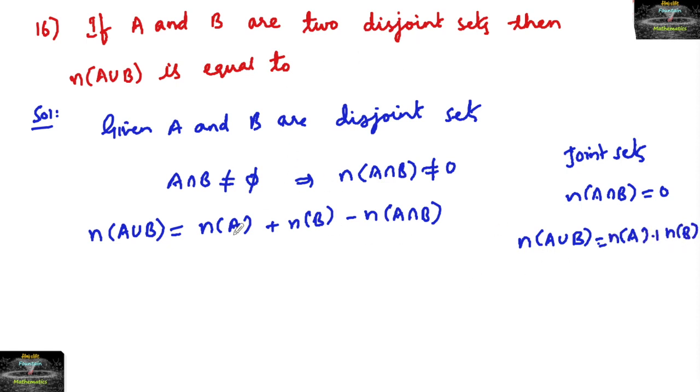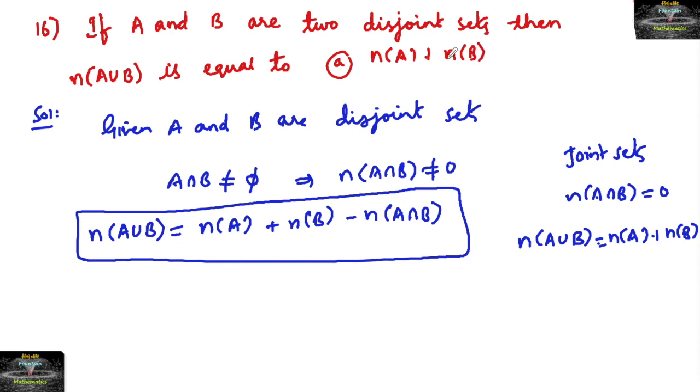Now for these two disjoint sets, n(A∪B) is equal to n(A) plus n(B) minus n(A∩B) is the answer. So we had the options. The options are given. Option A: n(A) plus n(B). Option B is given: n(A) plus n(B) minus n(A∩B).